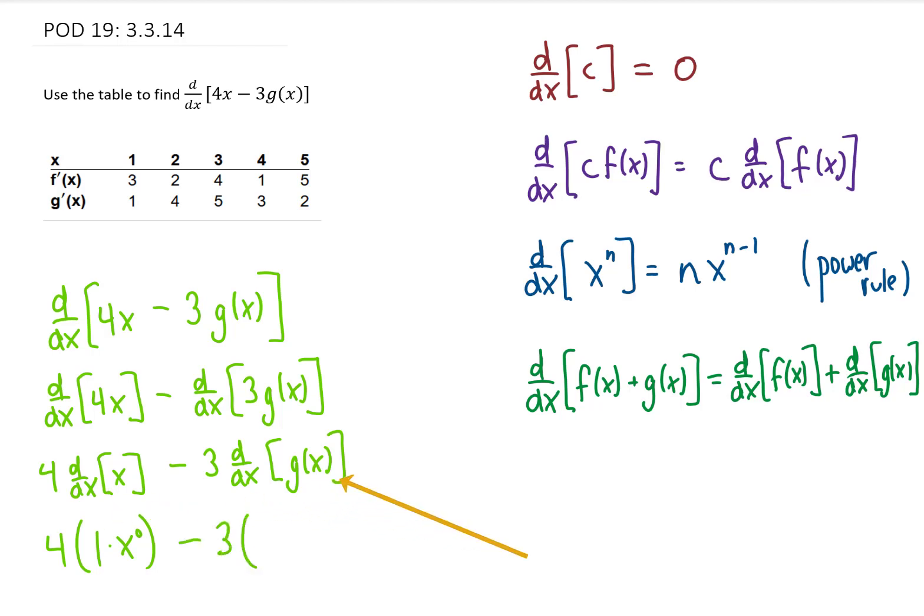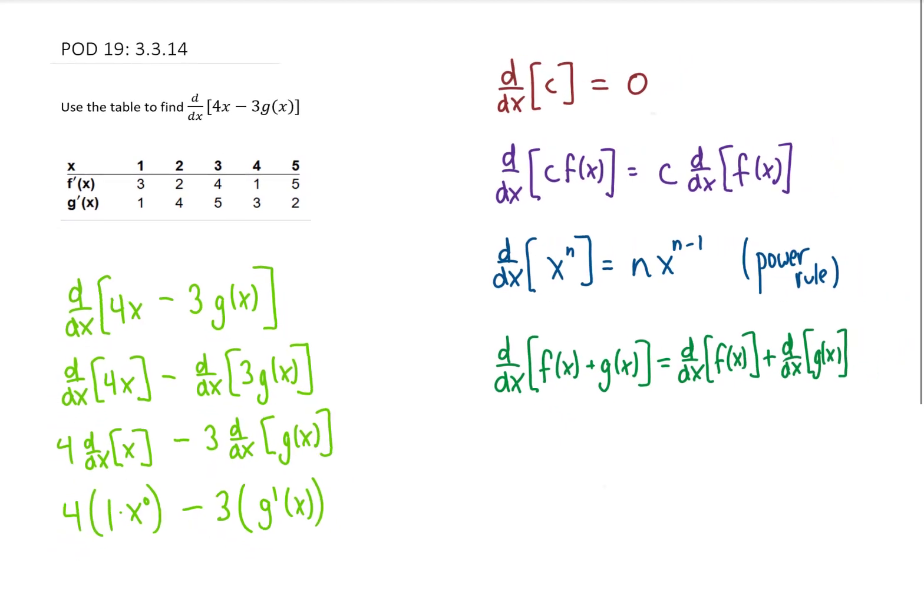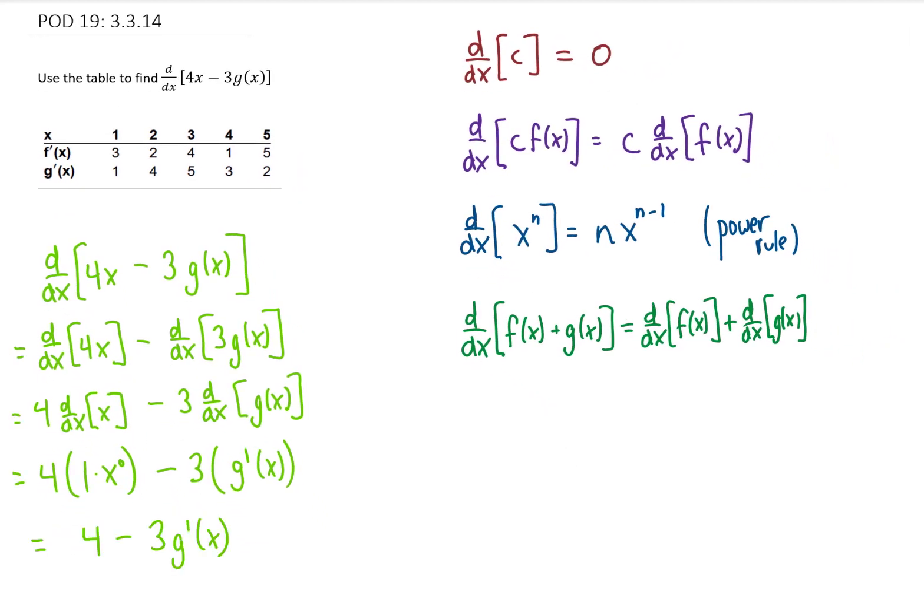Over here with this term we're going to leave the 3 out in front. The derivative of g of x with respect to x, well, we don't know, but we have notation for it. We call it g prime of x. So we found that our derivative can be simplified to 4 minus 3 times g prime of x.